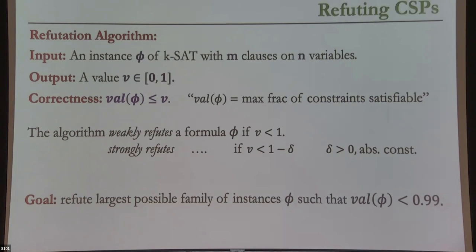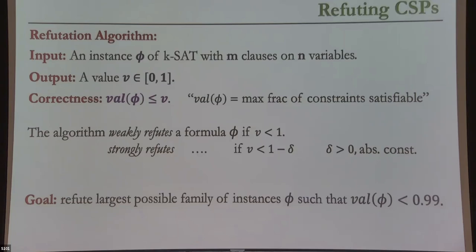Just as when you care about solving KSAT you look at satisfiable instances, we are looking at the problem of refuting KSAT, so we focus on unsatisfiable — in fact strictly unsatisfiable — instances. My goal is to design refutation algorithms that succeed for as broad a family of unsatisfiable instances as possible. A couple of caveats: I'll mostly focus on average-case models, but I'll start with worst case to provide the right context.